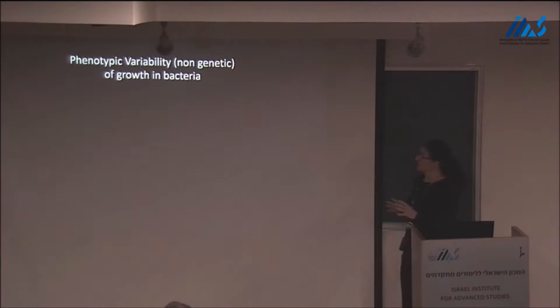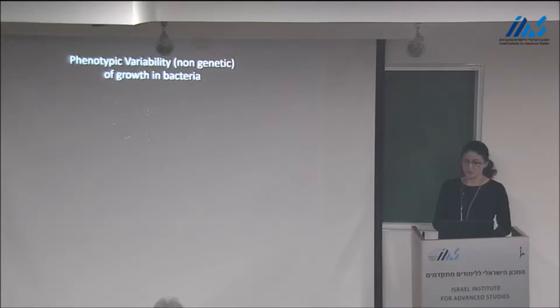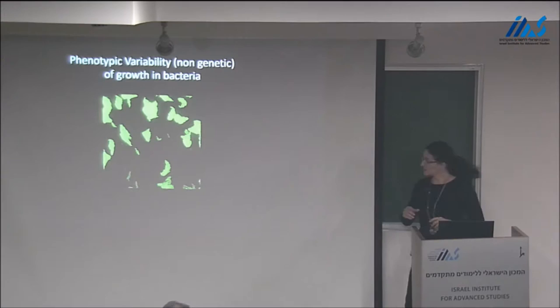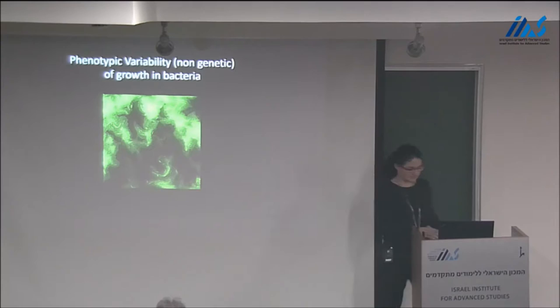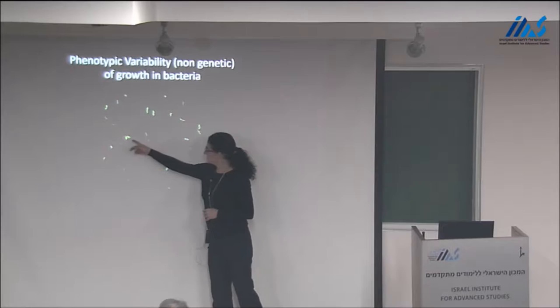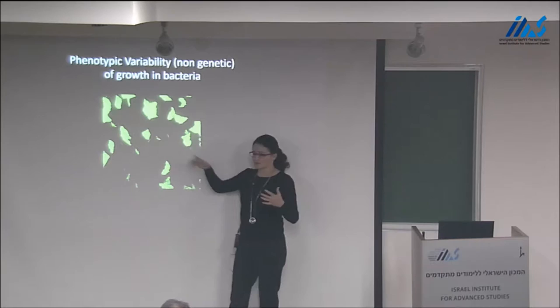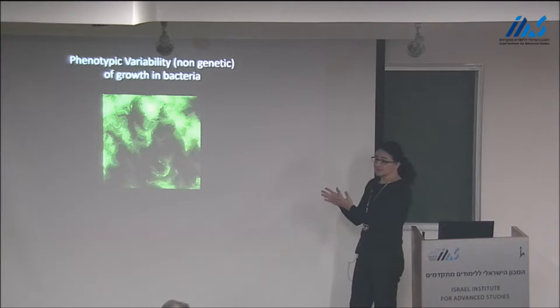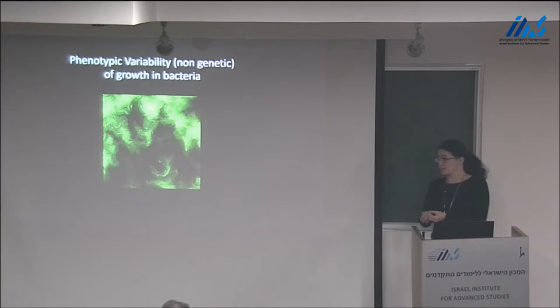What do I mean by phenotypic variability? Here is an example. This is a population of E. coli just taken from a stationary phase and plated on fresh medium and they start growing. You can see that bacteria grow, but some of them grow at a much later time. Some of them will start growing immediately, some of them will sit there — but eventually they'll grow, and once they grow, they'll grow at the same rate as the other bacteria. For some reason these bacteria are growth-arrested for a certain period of time. These bacteria are genetically identical — they all came from the same clone.